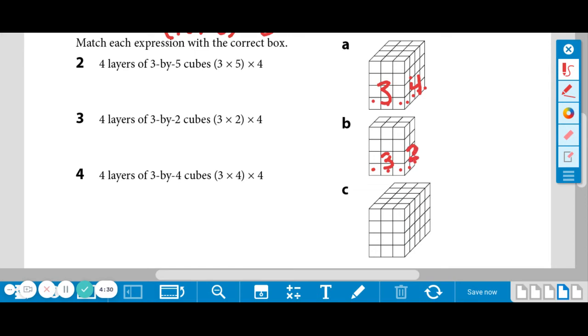Let's look at C. We have 1, 2, 3 by 1, 2, 3, 4, 5. There's the 5. So we could write the letter or you can draw a line.